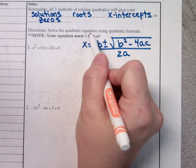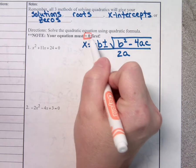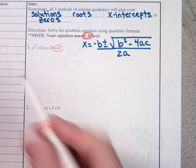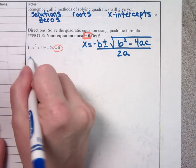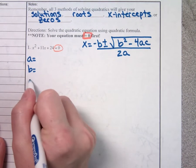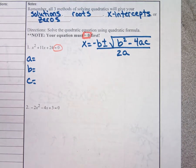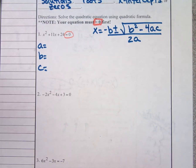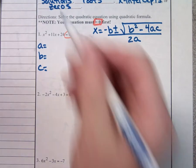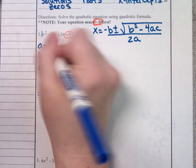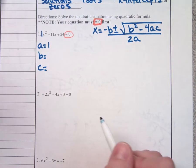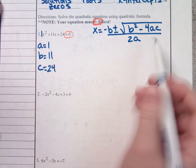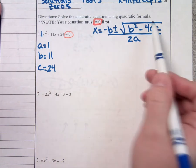The directions remind you that the equation needs to say equals 0 first, or equals y. Does number 1 say equals 0? Yes. First thing: identify A, B, and C, then plug them into the formula. What is A? Positive 1 — that's what's in front of the x squared. What's B? 11. What's C? 24.